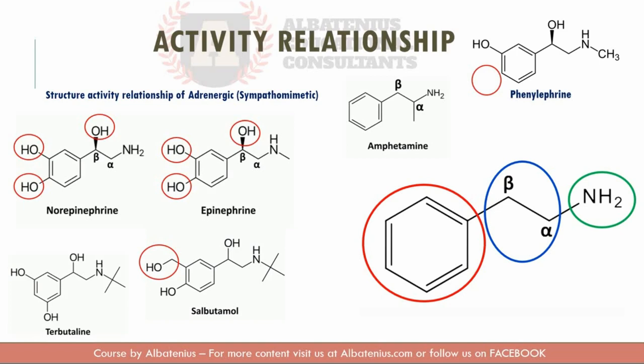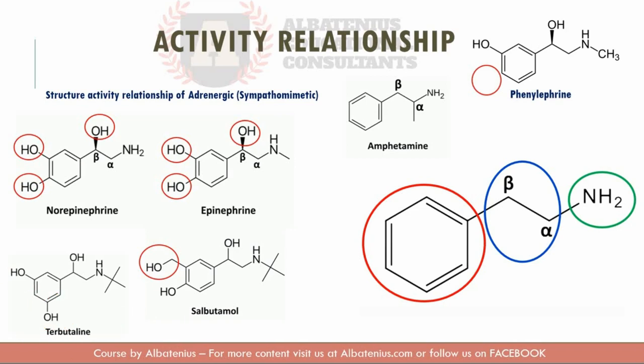Now let's discuss the second part: the ethylene linkage. For optimal activity, the amino group should be separated from the aromatic ring by two carbon atoms — the alpha and beta carbons. All the structures shown maintain this two-carbon separation. Shortening or lengthening this linkage will decrease the activity.